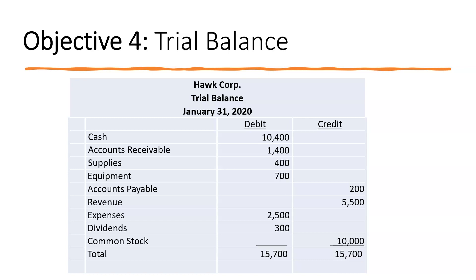That's all a trial balance does — it proves that debits equal credits and shows the balance in each account. It does not mean we did all the entries correctly. If we used wrong accounts, we won't catch that in the trial balance. If the amounts were wrong but equal on both the debit and credit side, we won't see that either. The trial balance is simply meant to show ledger account balances and confirm that debits equal credits.